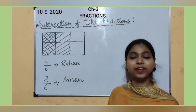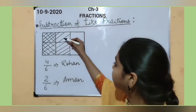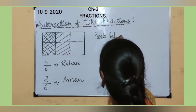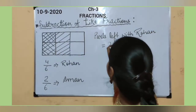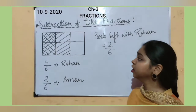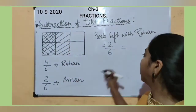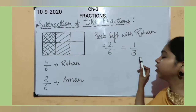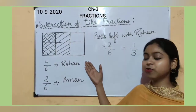Now it's your time to tell me how many parts are left with Rohan to eat. We can observe through our given figure — this part and this part. The parts left with Rohan equals 1, 2. So 2 parts out of total 6 parts. If we divide the whole chocolate into 3 equal parts — 1, 2, and 3 — we can say 1 part out of total 3 parts has been left with Rohan. So 1 upon 3 is the lowest term of our fraction 2 upon 6.